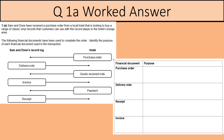Question 1a. Sam and Drew have received a purchase order from a local hotel which is looking to buy a range of classic vinyl records for customers to use with the record player in the hotel's lounge area. The following financial documents have been used to complete the order. Identify the purpose of each financial document used in this transaction. There are four documents and we just need to put the purposes — one mark available for each one.